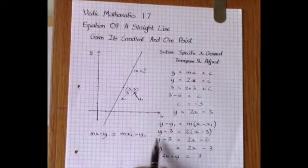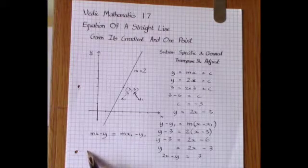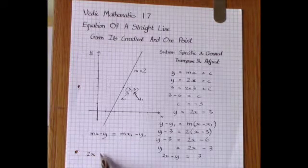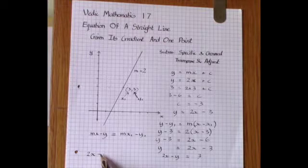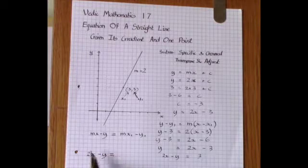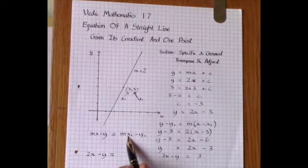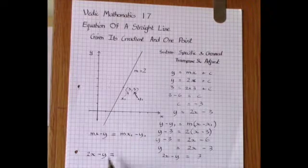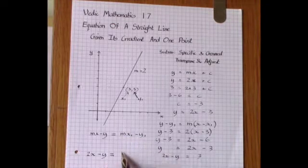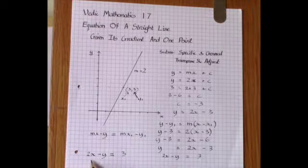Here again we just substitute in the numbers: 2x minus y is equal to 2 times 3 minus 3. We can do that mentally, 2 times 3 minus 3 is 3, and that gives the answer in one line.